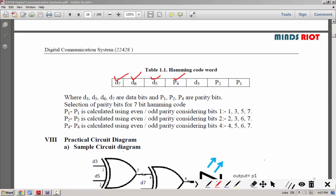Therefore, we will get for P1 bit: 1, 3, 5, 7; for P2 bit: 2, 3, 6, 7; and for P4 bit: 4, 5, 6, 7. Thus, we will get the following Hamming code word for 4 bits of data.